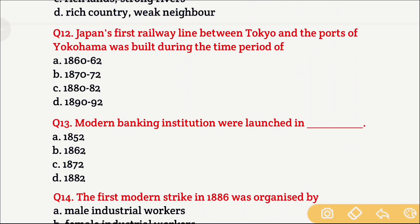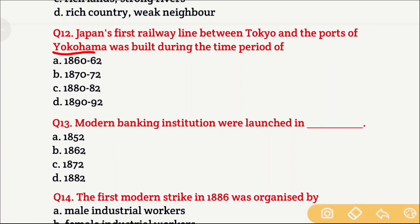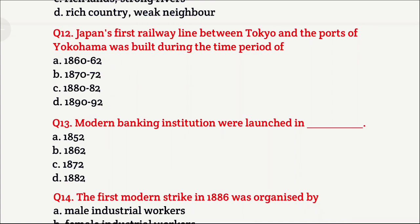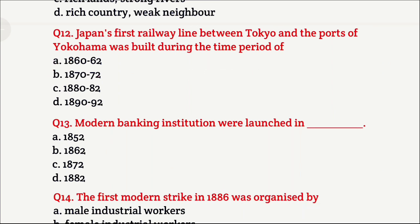Question 12: Japan's first railway line between Tokyo and the port of Yokohama was built during the time period of — Option A is 1860 to 1862, Option B is 1870 to 1872, Option C is 1880 to 1882, and Option D is 1892. The right answer is Option B, which is 1870 to 1872.